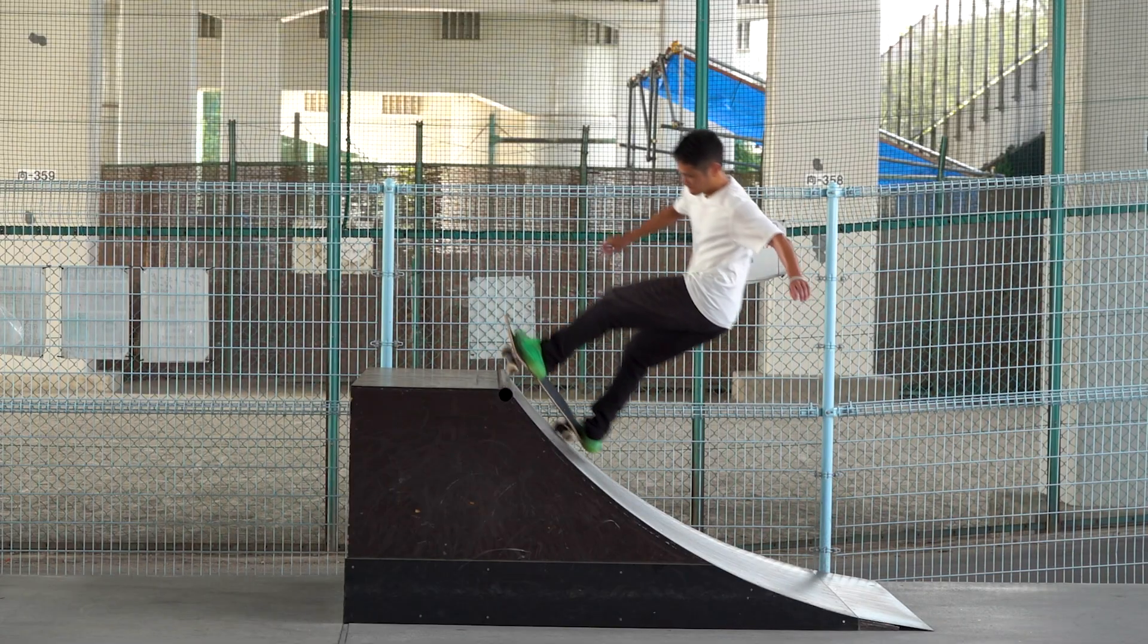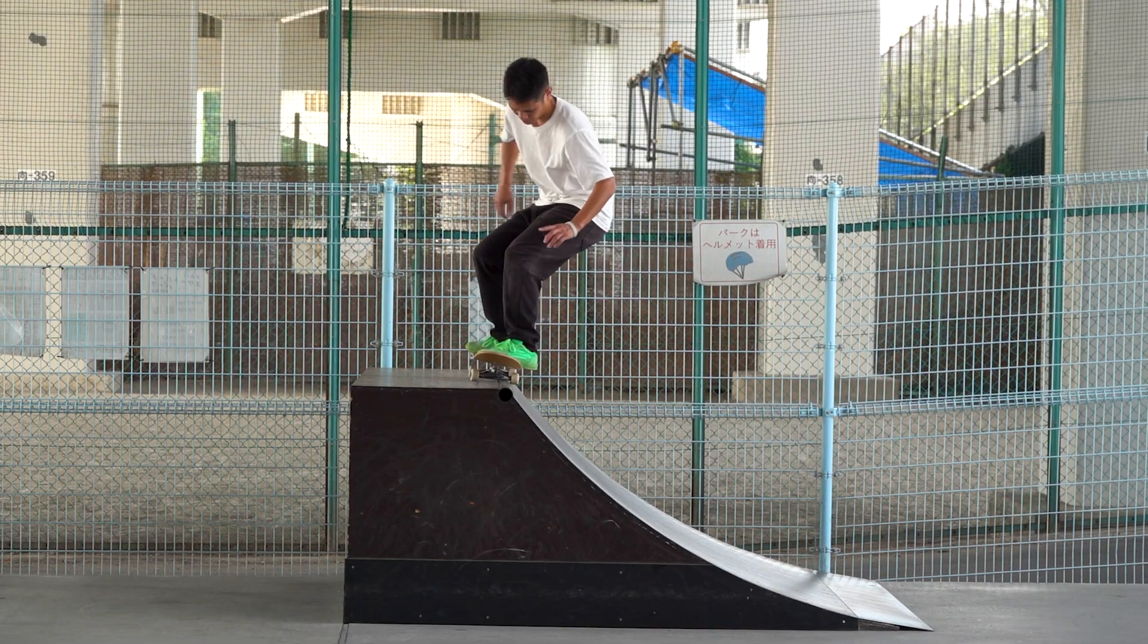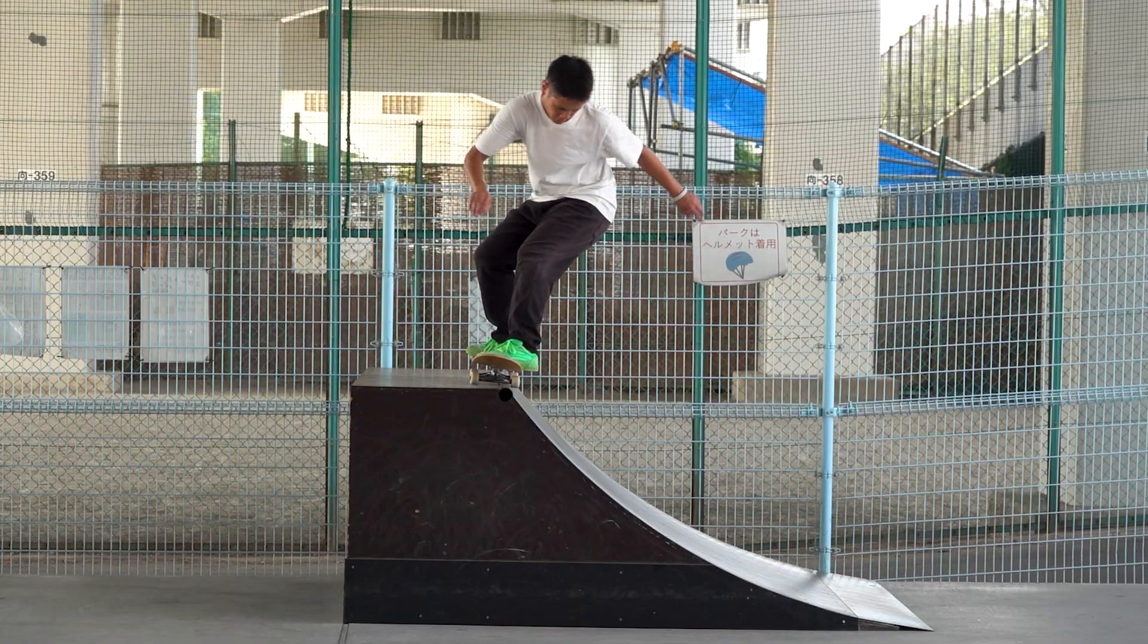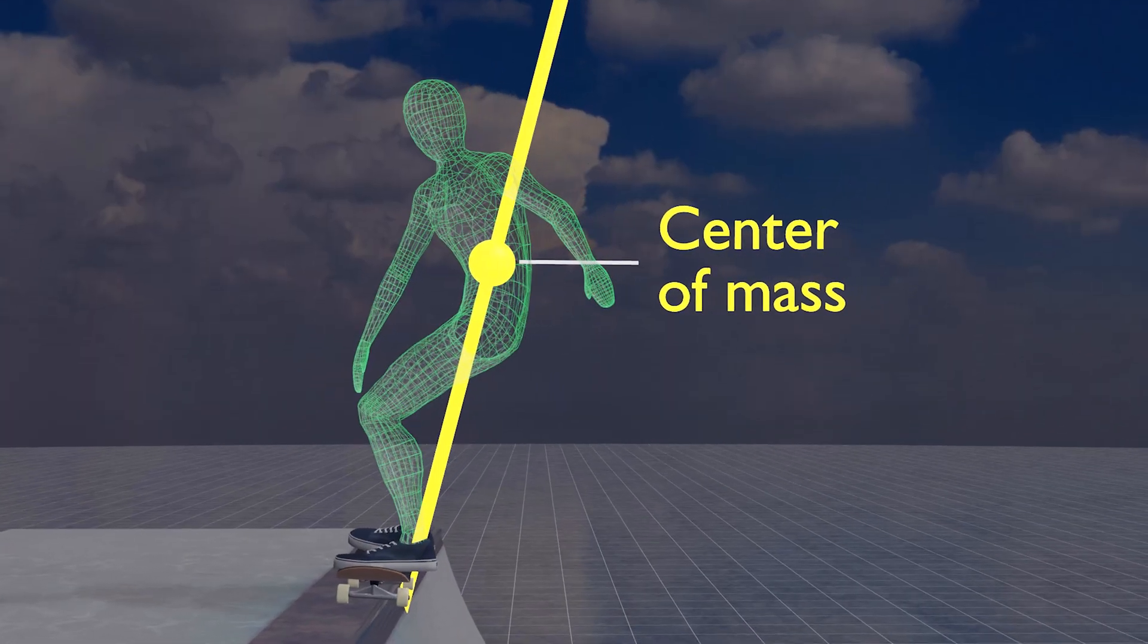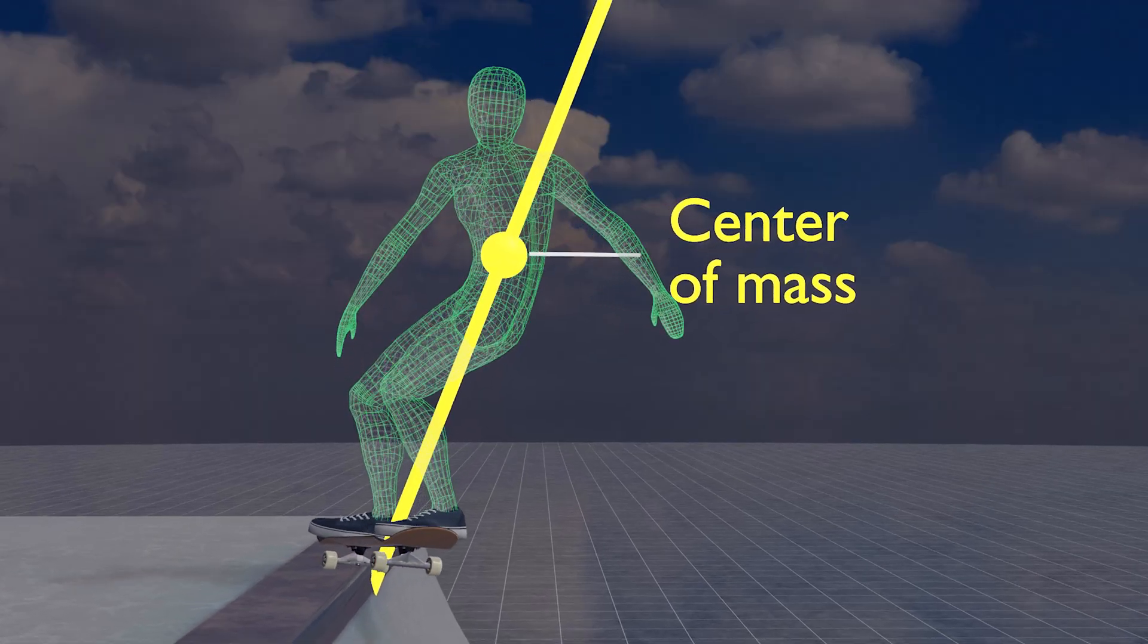Front side 50-50 is on transition. Compared to back side, it is often strangely difficult. But once you understand the physics behind it, you'll see that it's actually much easier to approach.